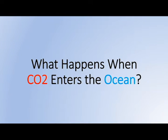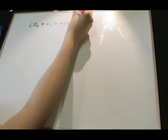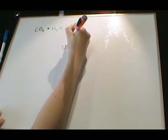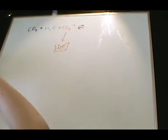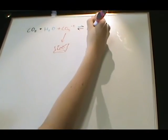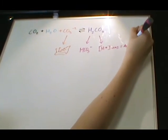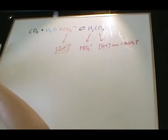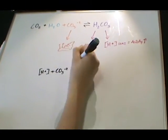When CO2 enters the ocean, the seawater and CO2 react. Here is the formula: carbon dioxide plus water plus carbonate — an ion in water that many organisms rely on to make their shells or skeletons. When the reaction occurs, carbonic acid is formed. Carbonic acid can dissociate, or break down, into bicarbonate and H+ ions. Since a large amount of CO2 is added to the oceans, a large amount of carbonic acid is produced as well, causing an increase in bicarbonate and H+ ions. H+ ions cause the ocean water to become acidic.